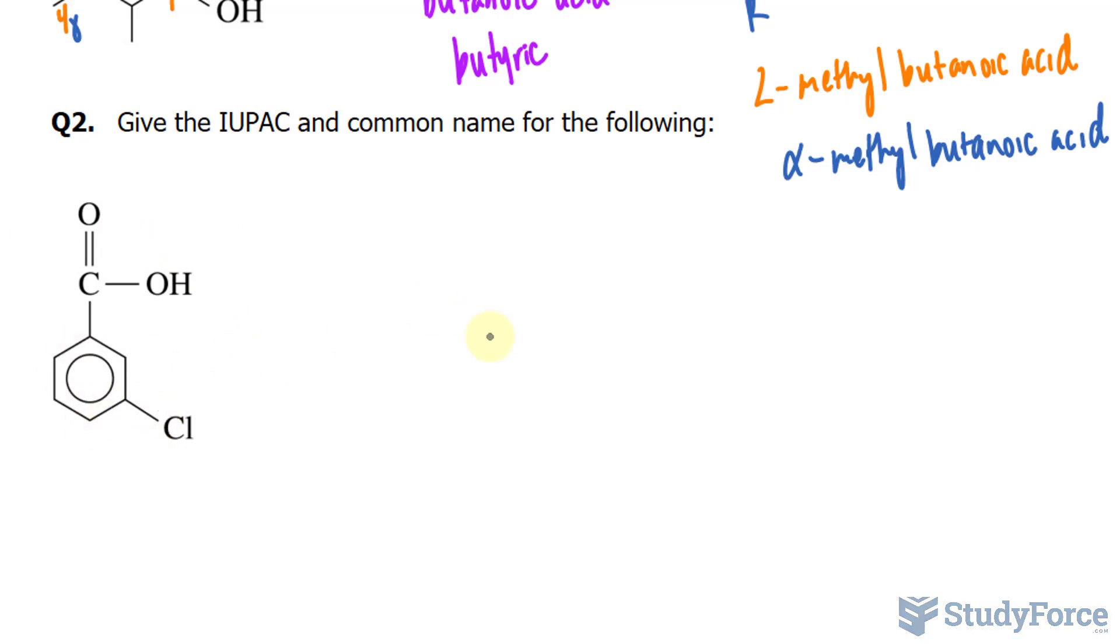Normally we would call this benzene ring simply benzene. And this time we drop the E and we write benzoic acid.